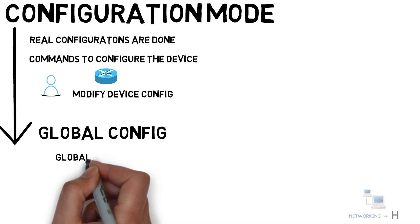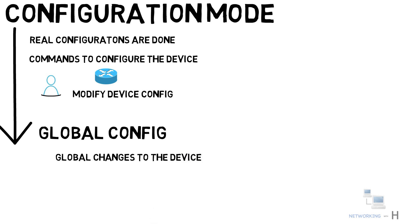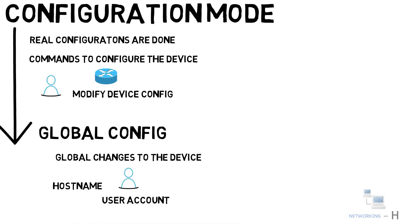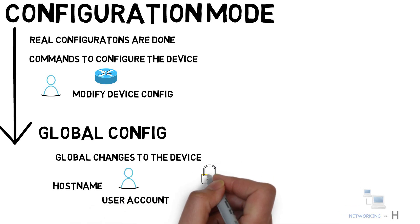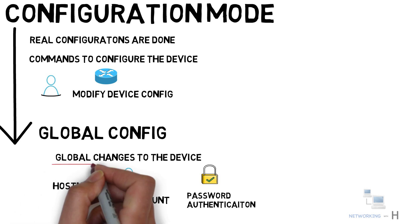Configuration mode has various sub-modes, starting with the global configuration mode. In this mode you can make global changes to the device you are configuring, such as configuring a new hostname, creating a user account, setting up a password, or configuring authentication. The commands in global configuration mode usually apply to features that affect the system as a whole — hence the name global.